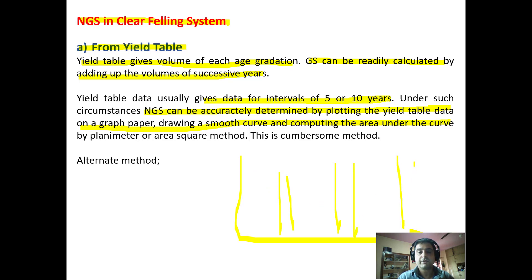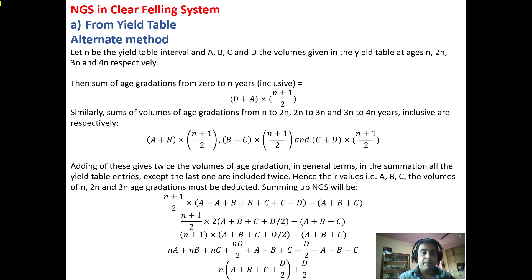For different age classes it will give you the growing stock at different age classes, say 5, say 10, say 15. You draw a smooth curve and computing the area under the curve by planimeter or area square method will give you the normal growing stock. Now we have an alternate method for normal growing stock from yield table.